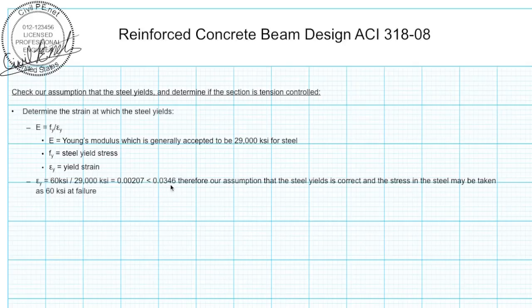This is much less than the steel strain that we calculated as 0.0346. Therefore our assumption is valid and the steel yields, so we can use the steel stress as 60 KSI, which is the steel yield stress.